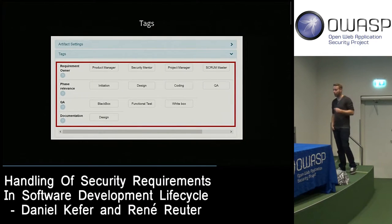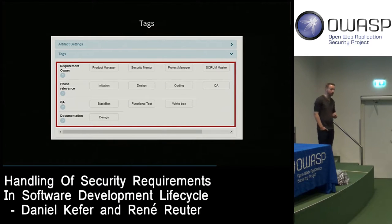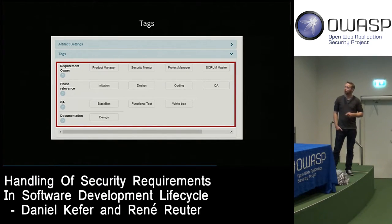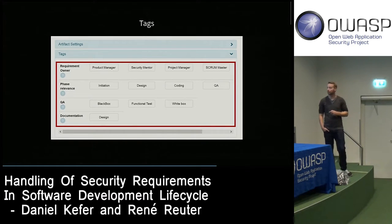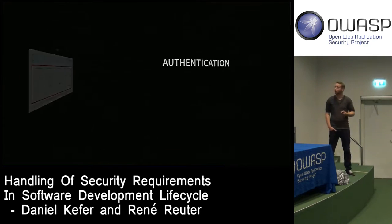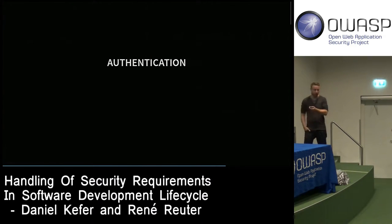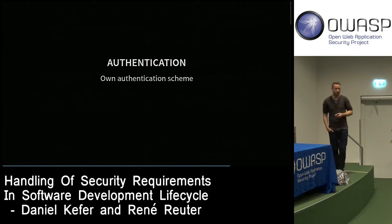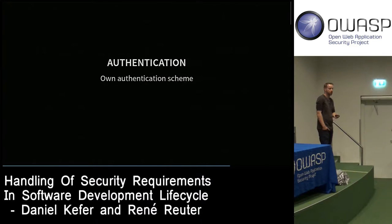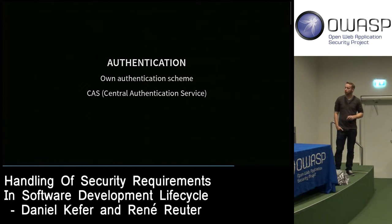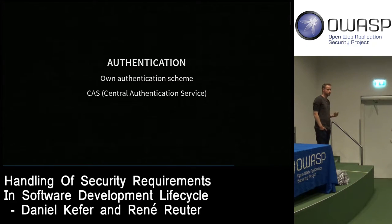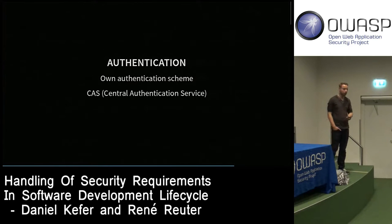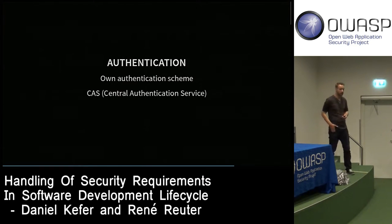Requirements can also be filtered by development phase — initiation, design, or coding — which is useful in large companies. For authentication, we support two schemes: a form-based scheme with a local user management database in the backend, and CAS — Central Authentication Service — which large companies typically use. You just point the Security Red configuration file to your CAS server.